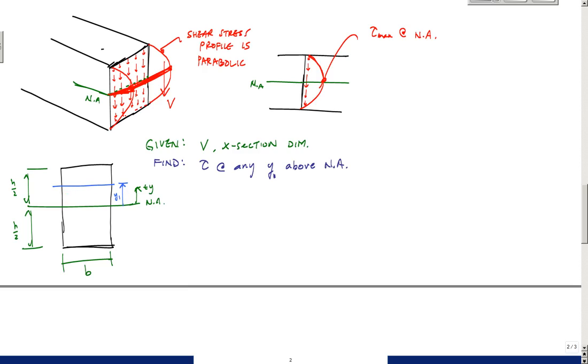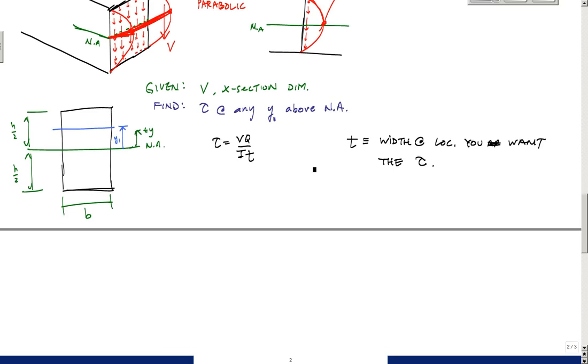If I want to find the transverse shear here, I just need to straight up apply my transverse shear formula. That transverse shear formula is tau is VQ over It, or Ib, which is the width. I'm going to say t here, and t represents the width at the location you want the shear stress. In this case, V is given, so check. t is just equal to b, so that's easy.